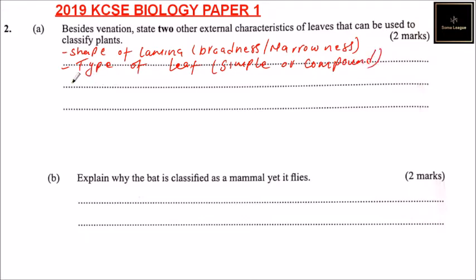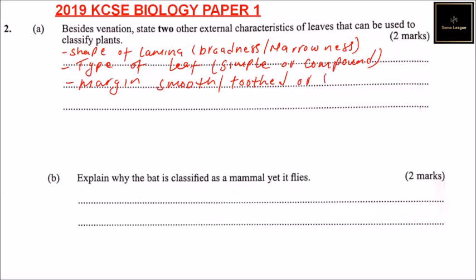I'm writing like that so that I have space, because I want to give more. So you can also talk of margin — we have smooth, we have toothed, or we may have smooth, toothed, or serrated. That is, it may be lobed. So that's another characteristic.